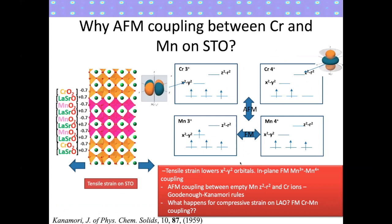We can explain the antiferromagnetic interaction at the interface by considering the orbital occupancies. Growing on STO applies tensile strain to the system, lowering the energy of the x²−y² orbitals pointing in-plane. In-plane, the coupling between the half-filled manganese orbital and the unoccupied orbital should be ferromagnetic. But out-of-plane, because you are coupling two unoccupied orbitals, the Goodenough-Kanamori rules predict antiferromagnetic exchange across this interface.